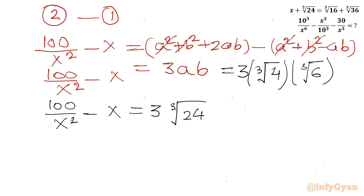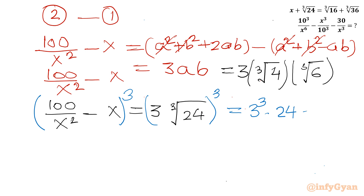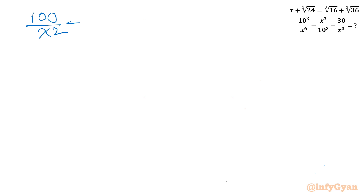Now cubing both sides: (100/x² − x)³ = (3∛24)³. On the right-hand side, 3³ = 27 and (∛24)³ = 24, so RHS = 27 × 24 = 648. Now I will apply the (a − b)³ formula to the left-hand side: (100/x² − x)³ = 648.